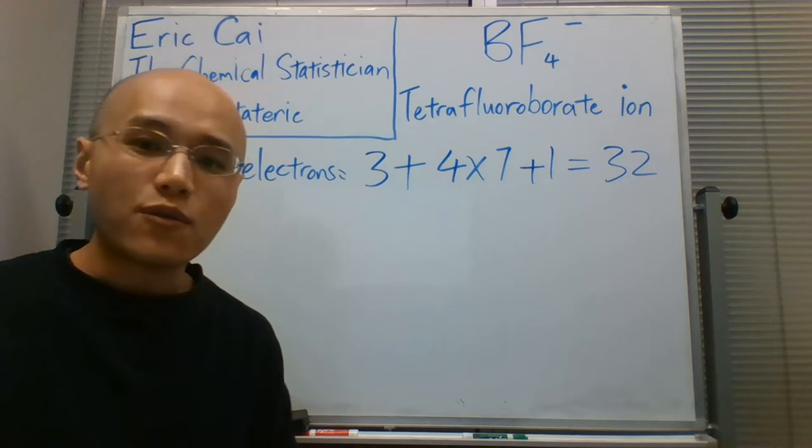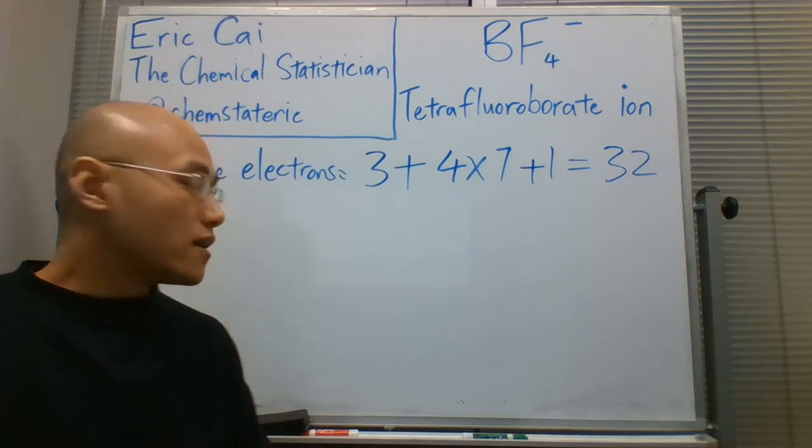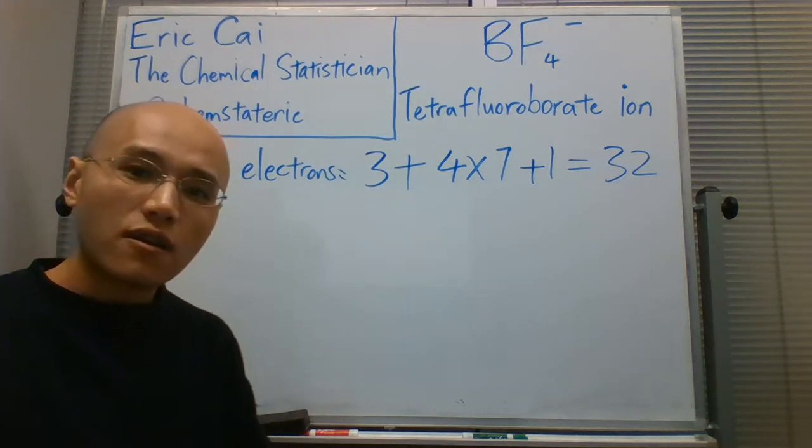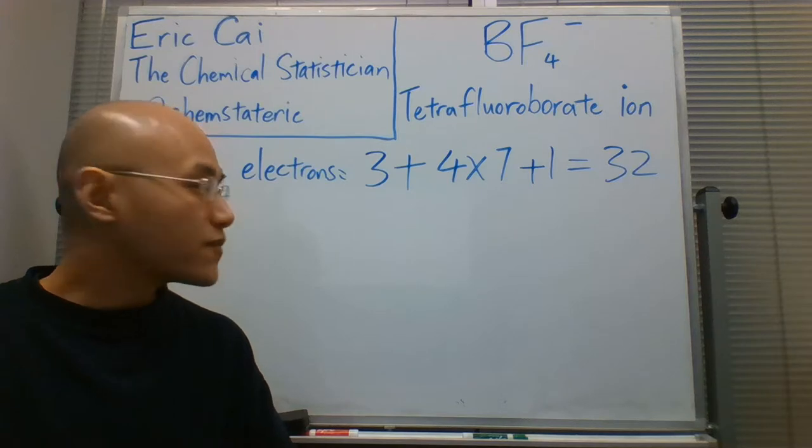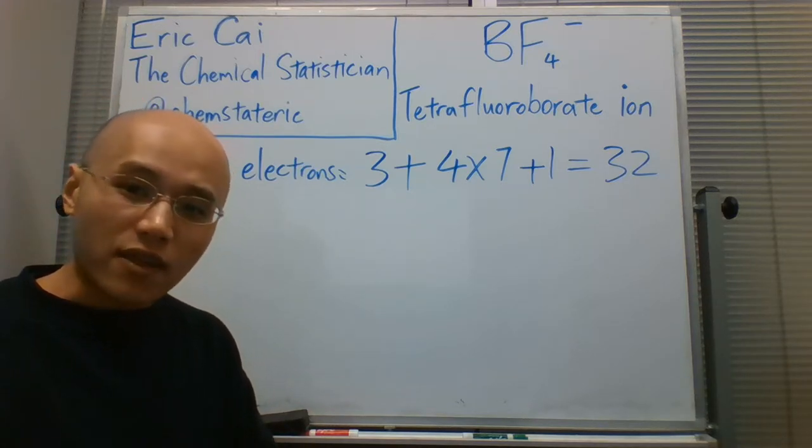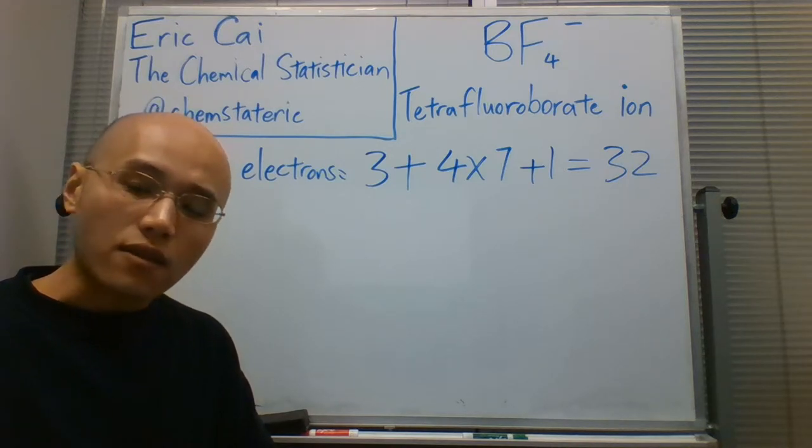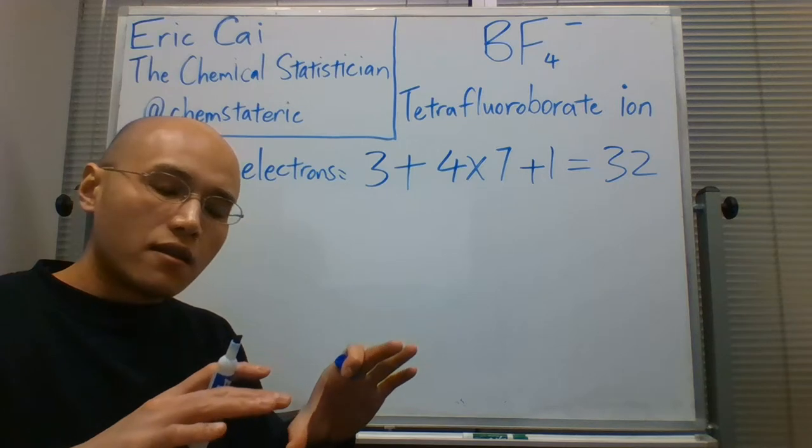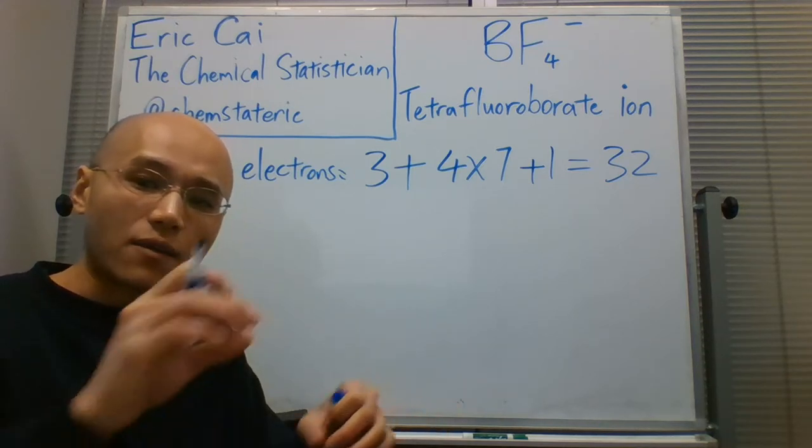Now, we need to determine the spatial arrangement of the atoms in two dimensions for the tetrafluoroborate ion. As always, I encourage you to think about the electronegativities. Fluorine is more electronegative than boron, so it makes sense to put the more electronegative atoms in the periphery and the less electronegative atom in the center.